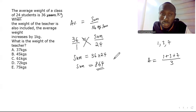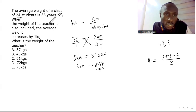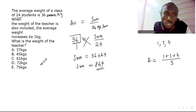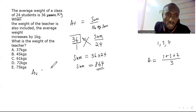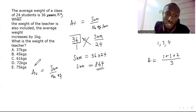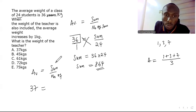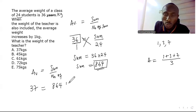When the teacher's weight is included, the average increases by 1 kg to 37 kg. Now the average equation becomes: 37 = (864 + y) / 25, where y is the teacher's weight and 25 is the total number of people (24 students + 1 teacher).